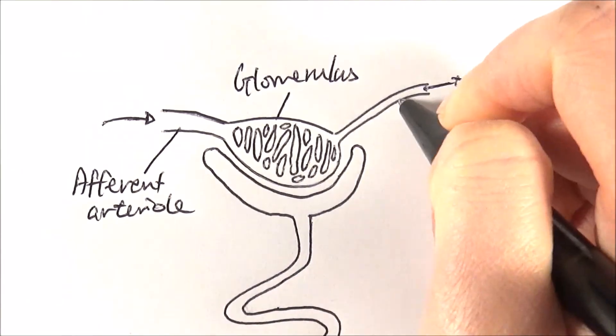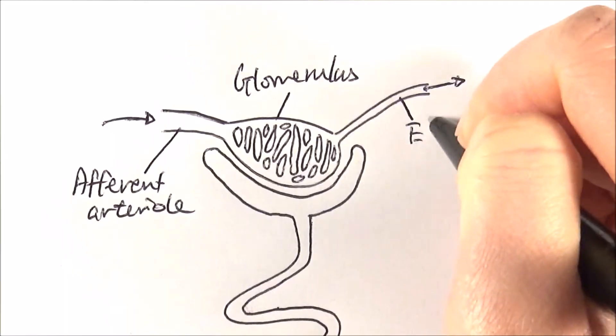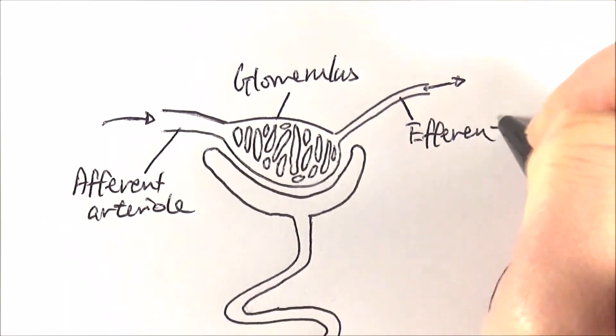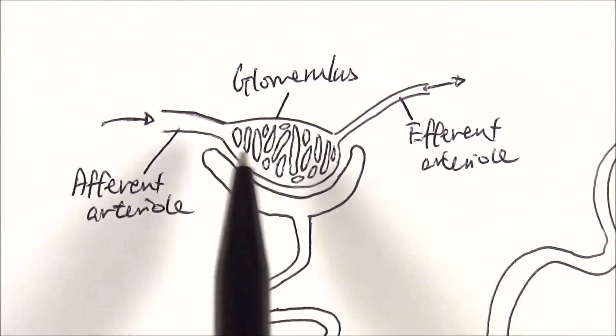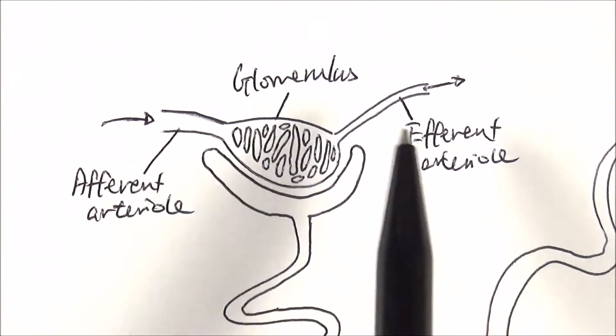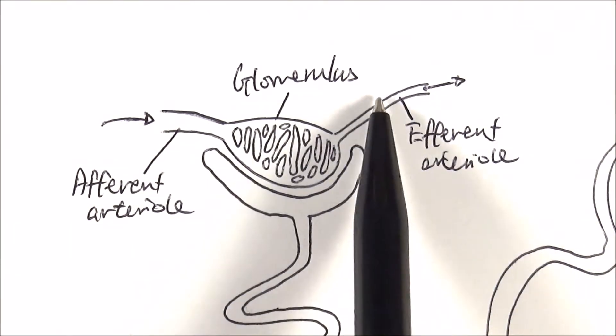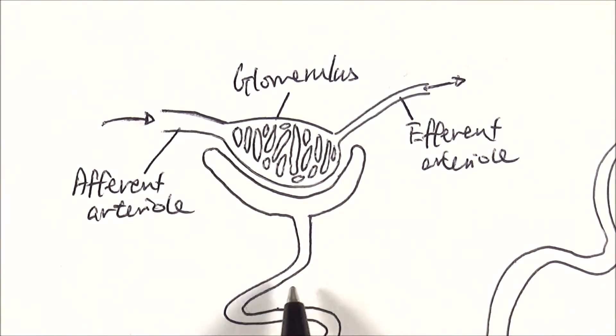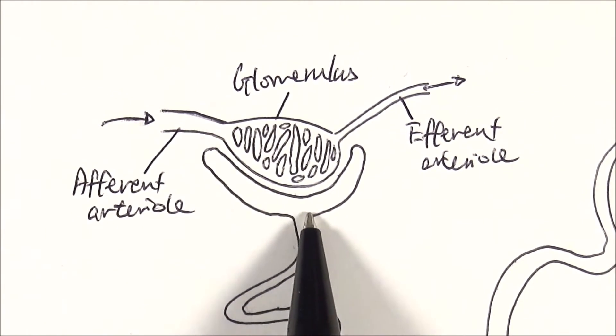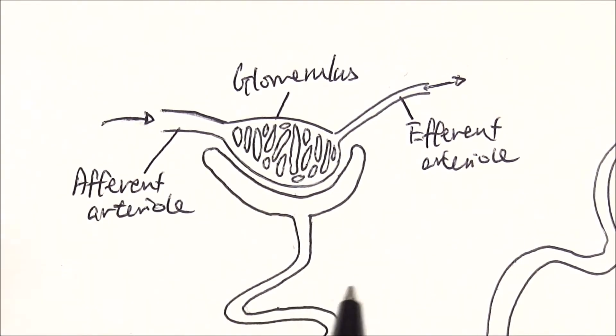And then finally after that it will leave via the efferent arteriole. Now in this particular case I've only drawn this particular part here, but imagine in reality the efferent arteriole then leaves and then it actually goes around the rest of the nephron intertwined with all of the rest of the structures, and that's for the selective reabsorption of useful materials from the filtrate here. We'll go into that a little bit more later on.